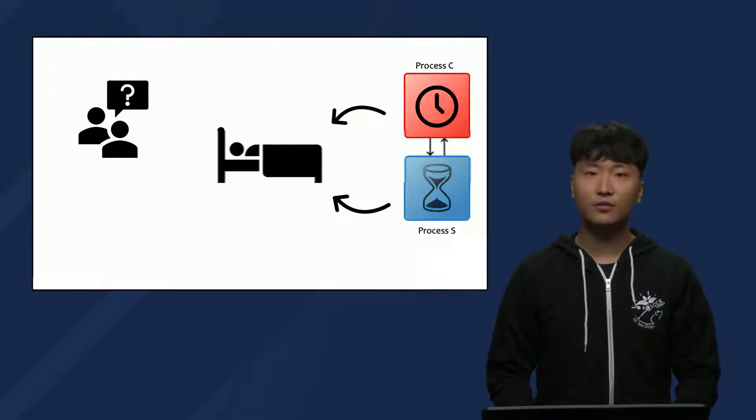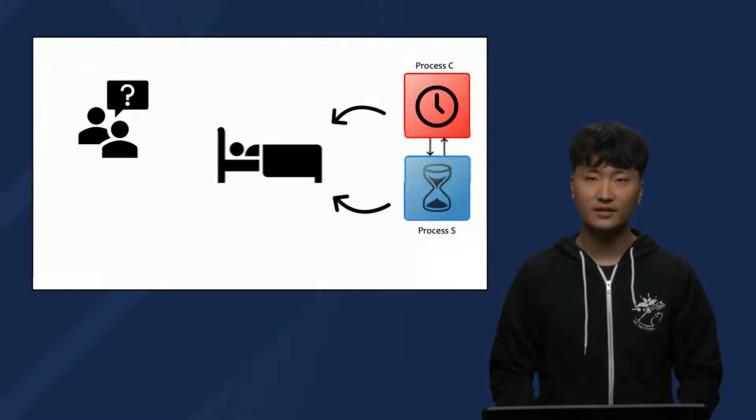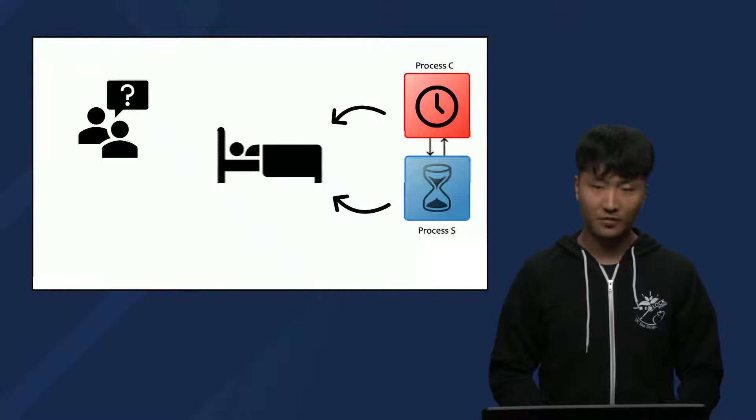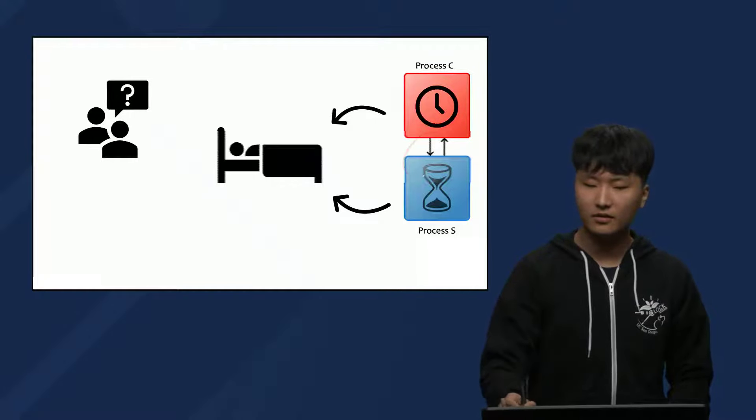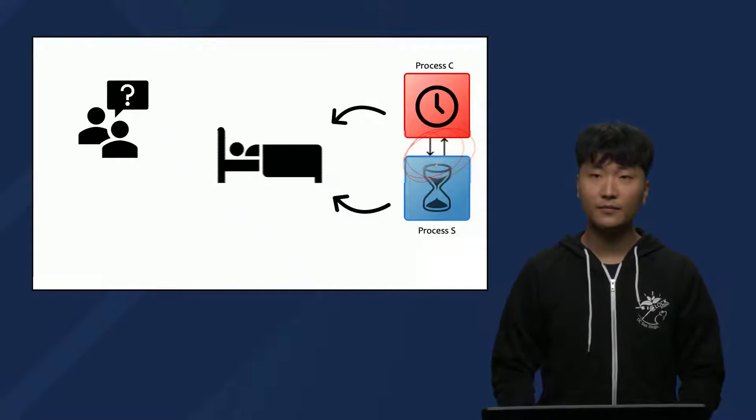Thinking about the two-process model, you might wonder how scientists are able to distinguish process C and process S in people. Because they normally interact, can they be measured separately in the same person? In order to find out, we will take a look at two different research papers in two videos.